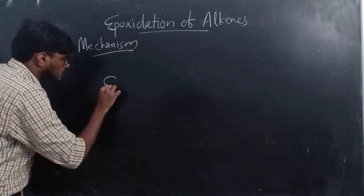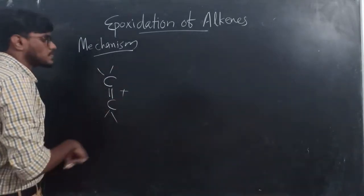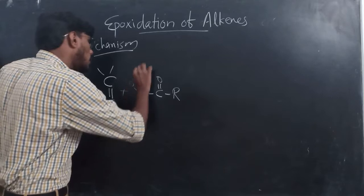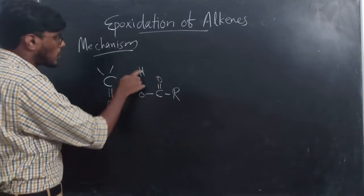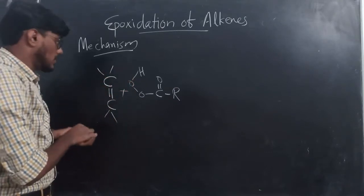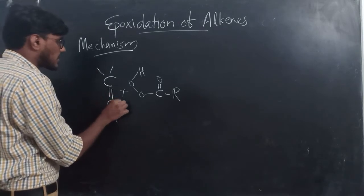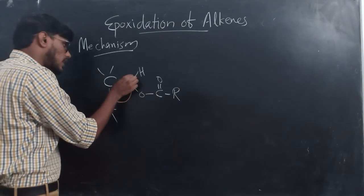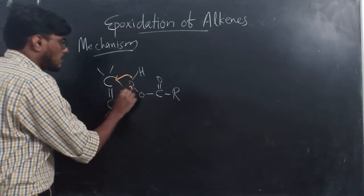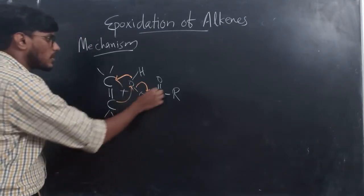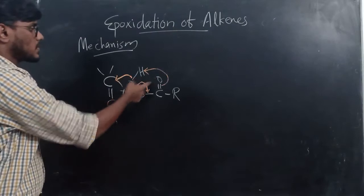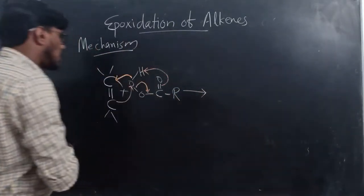For the mechanism of epoxidation, take an alkene reacting with a peroxy acid R-C(=O)-OOH. It is a single-step reaction in which one oxygen atom is transferred to the alkene. Using the pi electrons, one carbon attacks the oxygen; at the same time, another attack takes place on the other carbon; simultaneously this bond cleaves, forming a double bond.